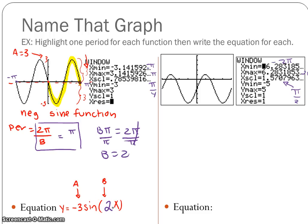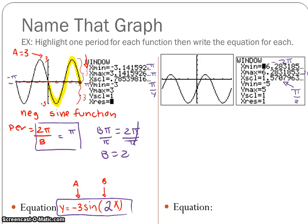So that is my equation: y = -3 sin(2x). You would have to look for a vertical shift, but there was none since the midline was on the x-axis. So that is our equation for graph one.